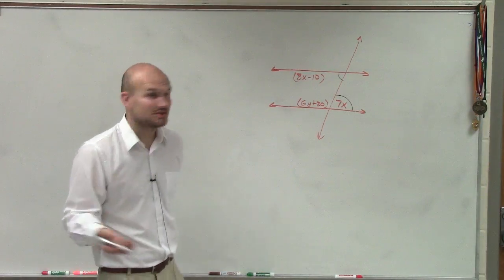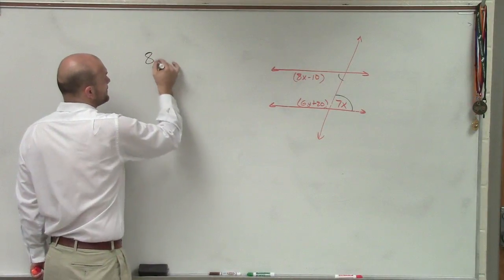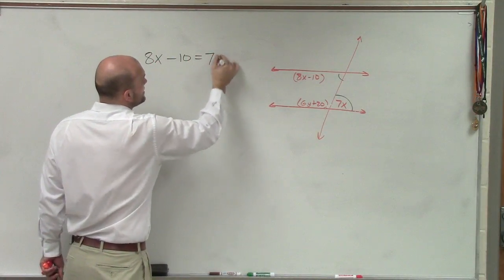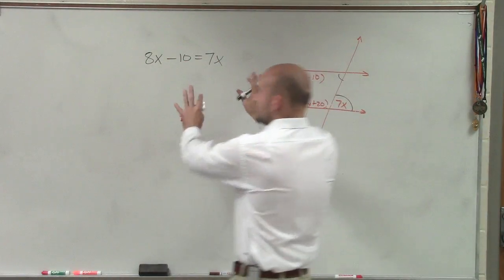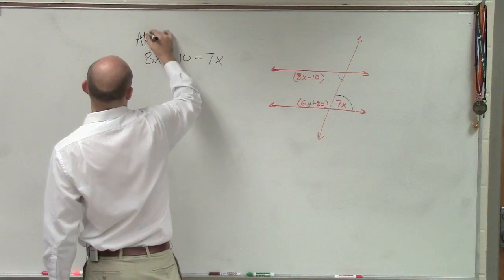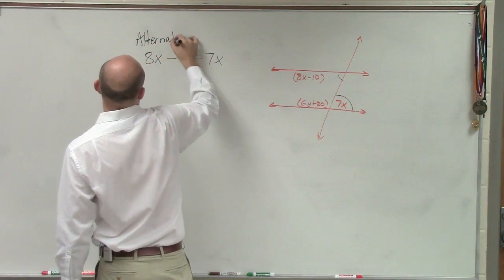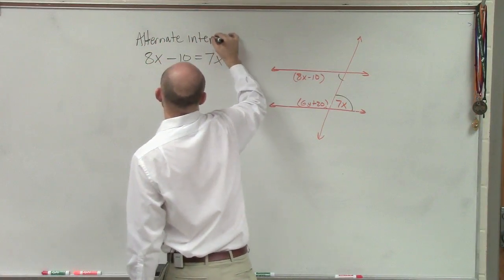They're equal in measure. So therefore, we can set up an equation, 8x minus 10 equals 7x. And please, ladies and gentlemen, let's get in the habit. If you apply a theorem, let's write it down.